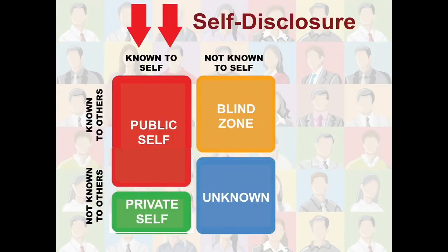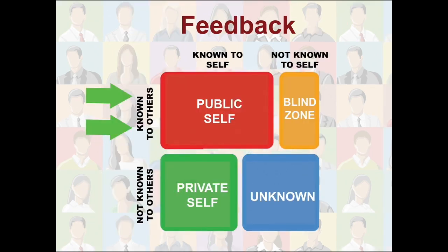When we self-disclose to others, the public self becomes larger and the private self becomes smaller. When we receive honest feedback from others, it also enlarges the public self and reduces the size of our blind zone. There's a tendency, however, for underlings to be very reluctant to provide honest feedback to the individuals in power — it's the shoot-the-messenger problem. Enlightened leaders encourage it. But sadly, not all who hold the reins of power are enlightened. Who in the Twelve has the courage to tell President Nelson to stop with the bogus miracle stories?